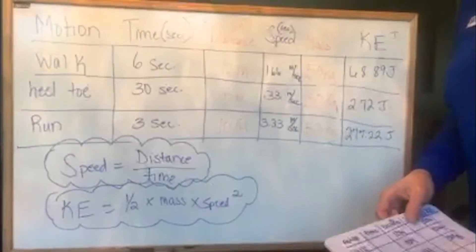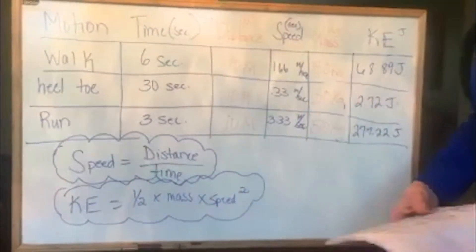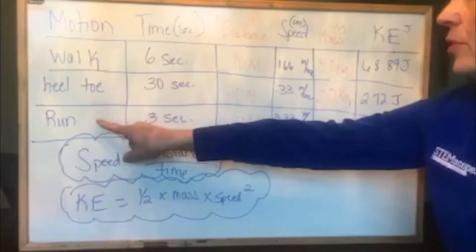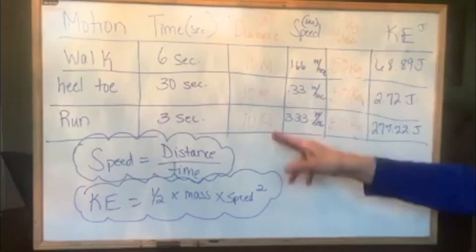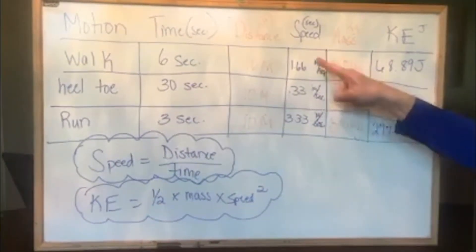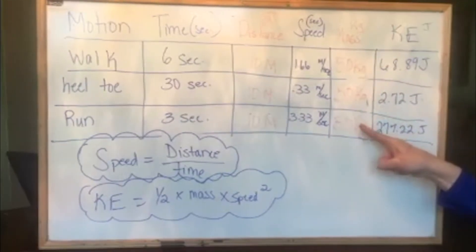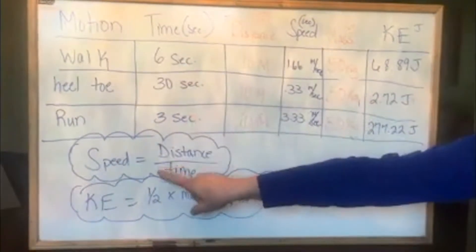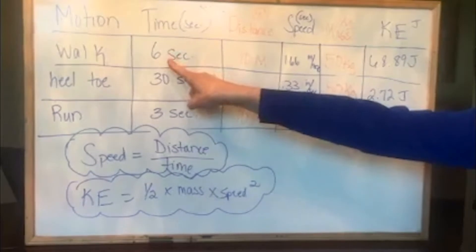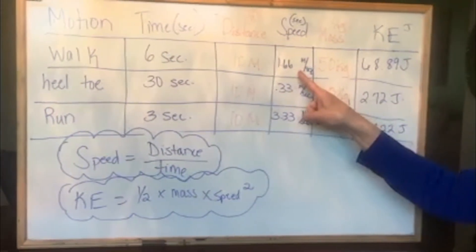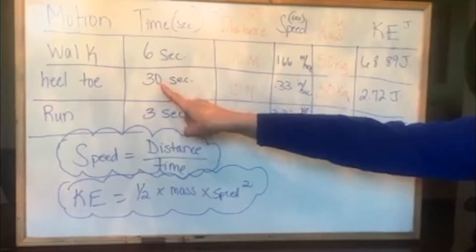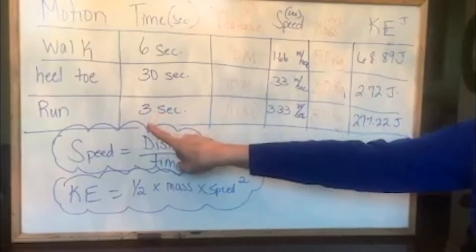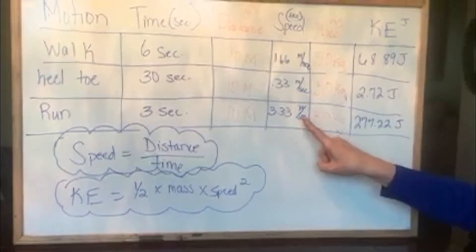Now we're back and we can calculate our data that we collected from outside. I took what we wrote in our notebook and put it onto a whiteboard so everybody can see it. Our columns were our different motions: walk, heel-toe, and run. Speed is distance over time. So that's 10 meters over 6 seconds, which gave me a speed of 1.66 meters per second. Then for heel-toe, 10 meters divided by 30 seconds gave me 0.33 meters per second. And for running, which was 3 seconds, 10 divided by 3 gave me 3.33 meters per second.